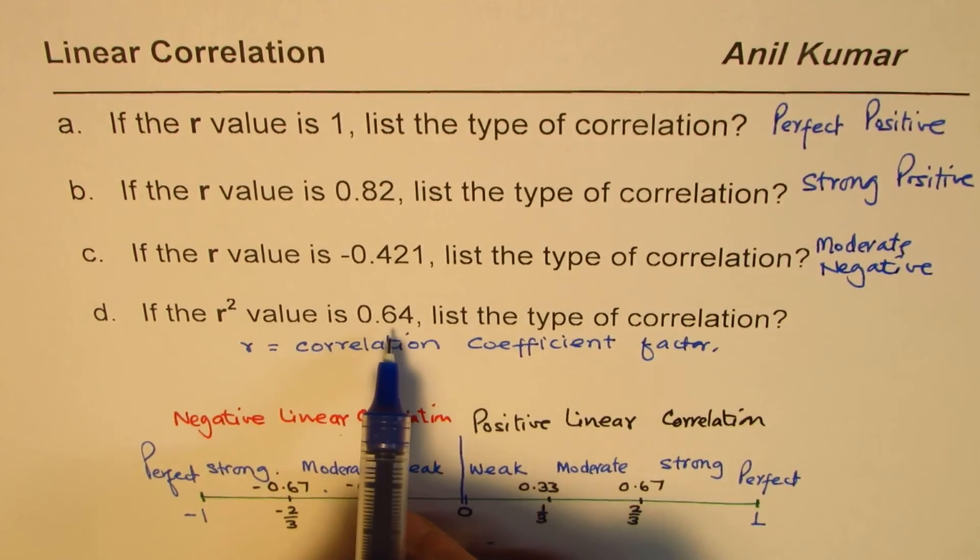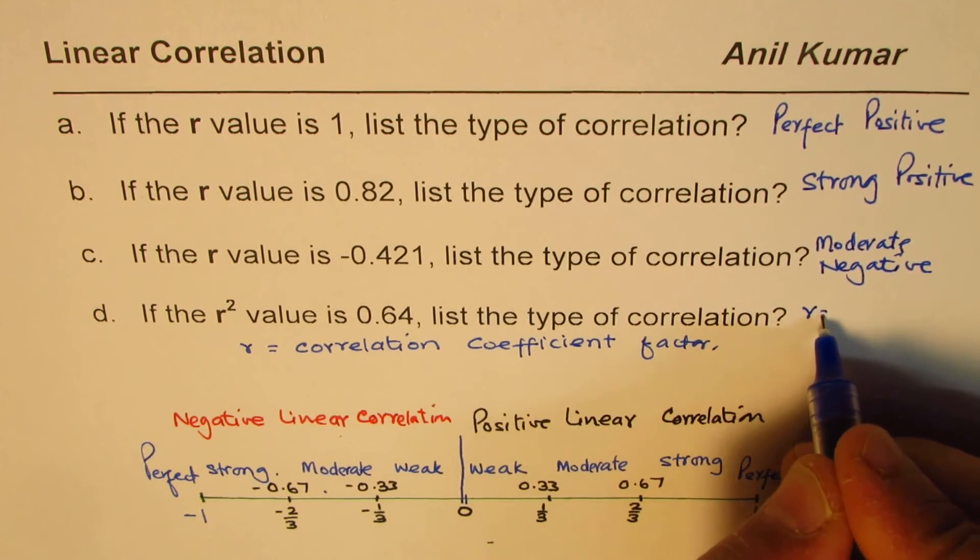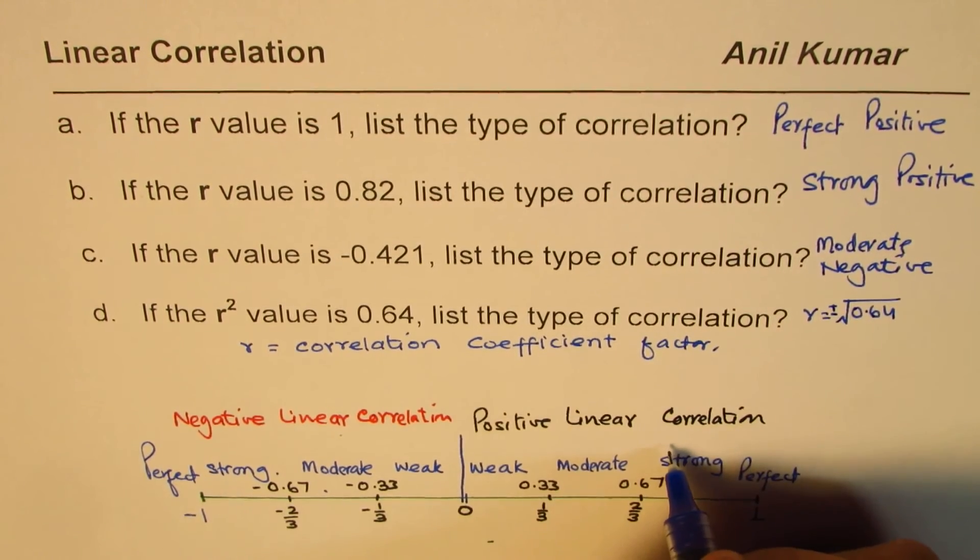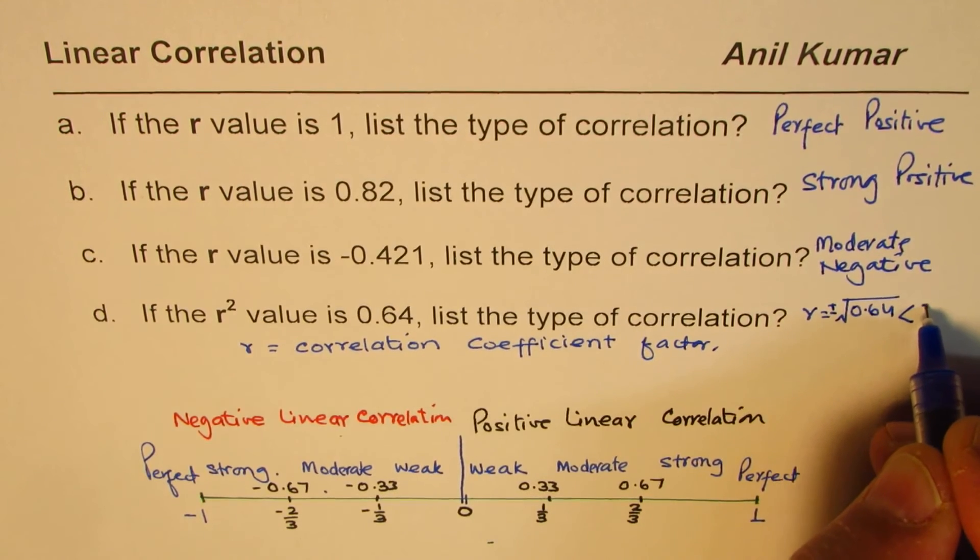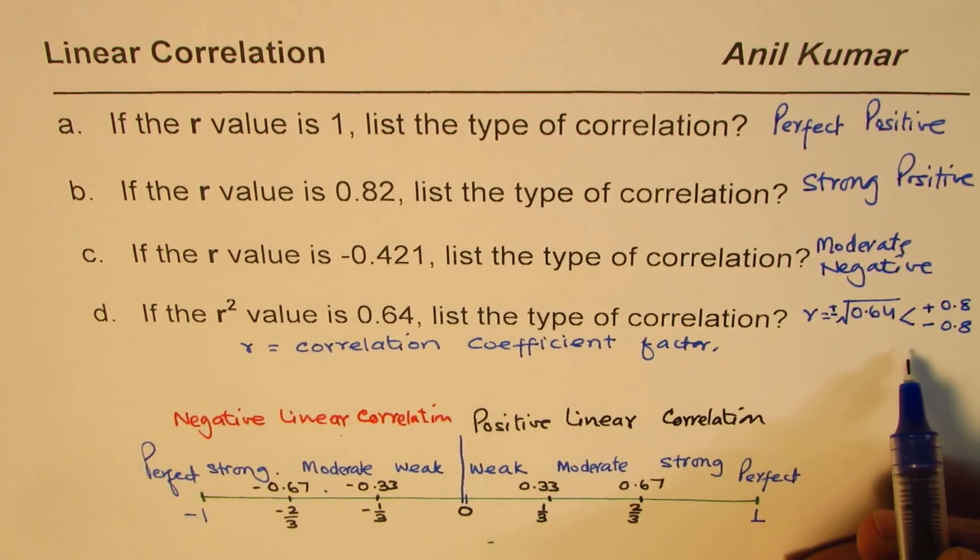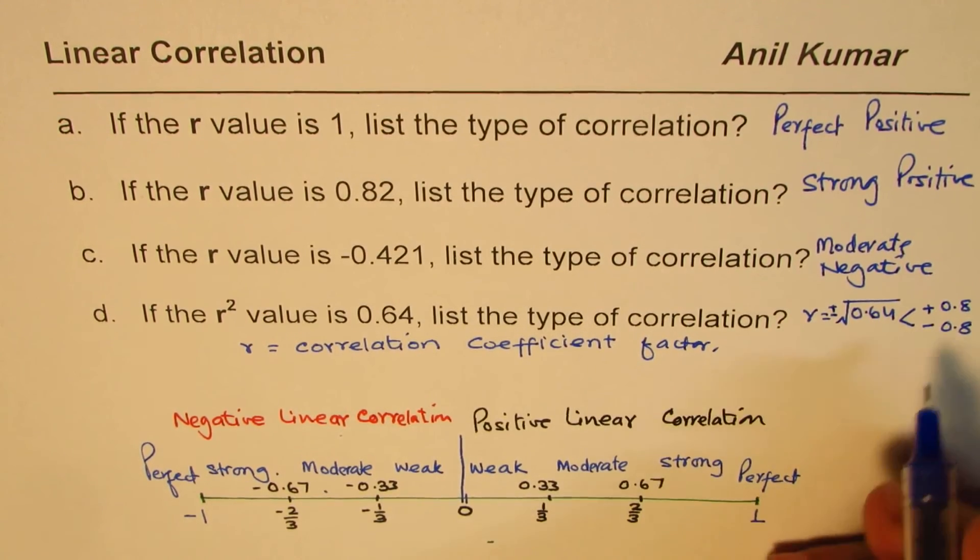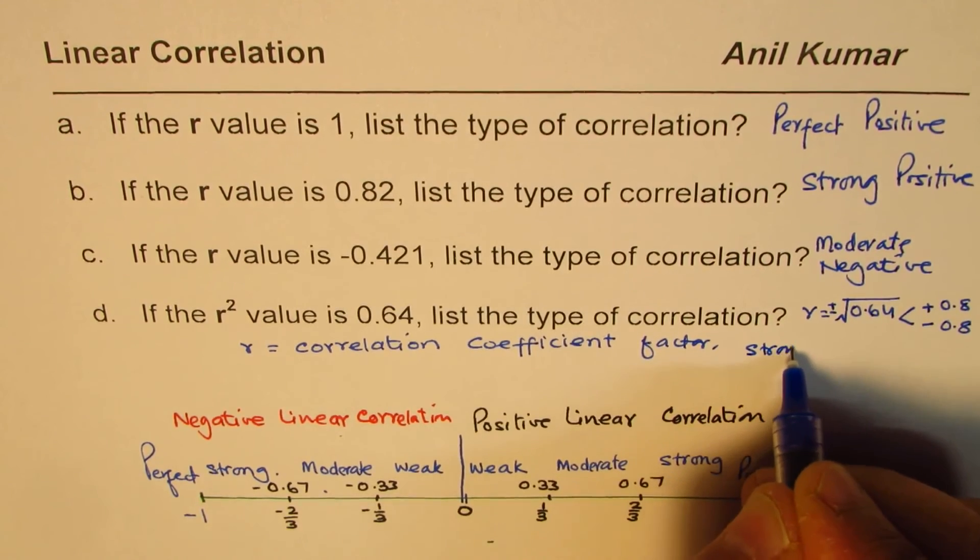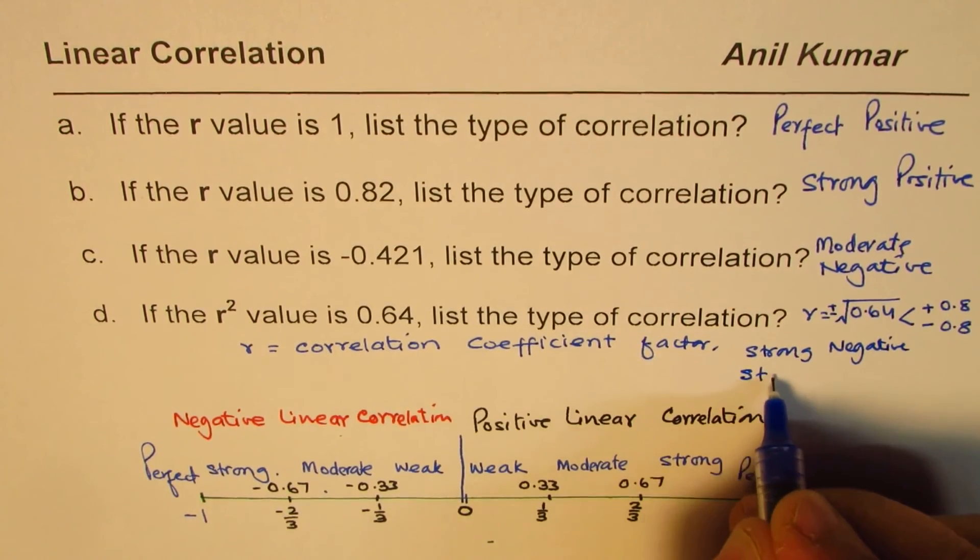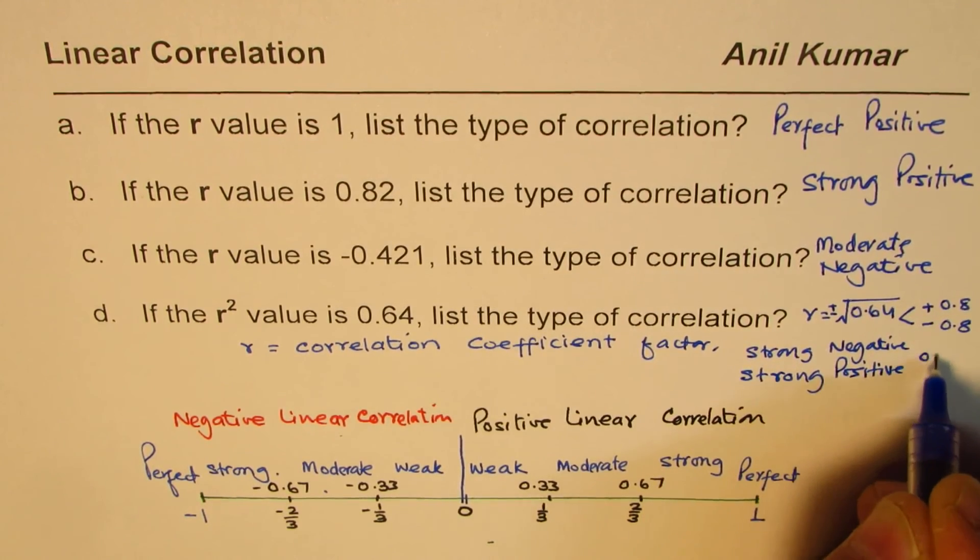And if r square is 0.64, then what it is. Well, if r square is 0.64, r will be square root of 0.64. Whenever you do square root, you have to take both positive and negative. So it could be positive or negative 0.8. And 0.8 is on the strong side. So it could be strong negative or strong positive. So both.